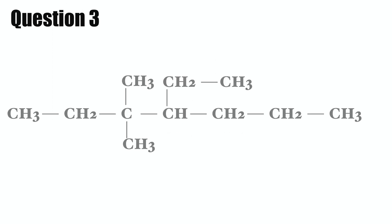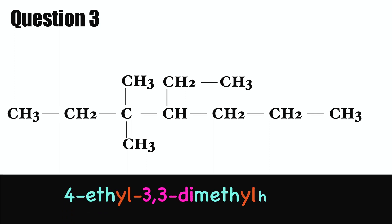Question three. The parent chain has seven carbons. There are two methyl substituents on carbon number three and one ethyl substituent on carbon number four. This compound is 4-ethyl-3,3-dimethylheptane.